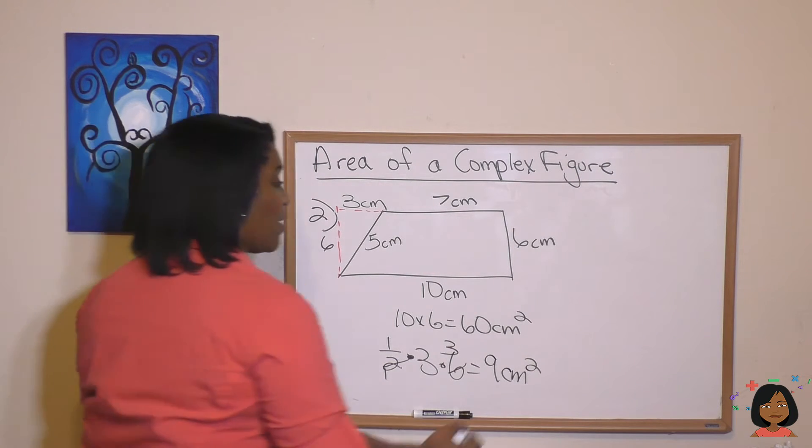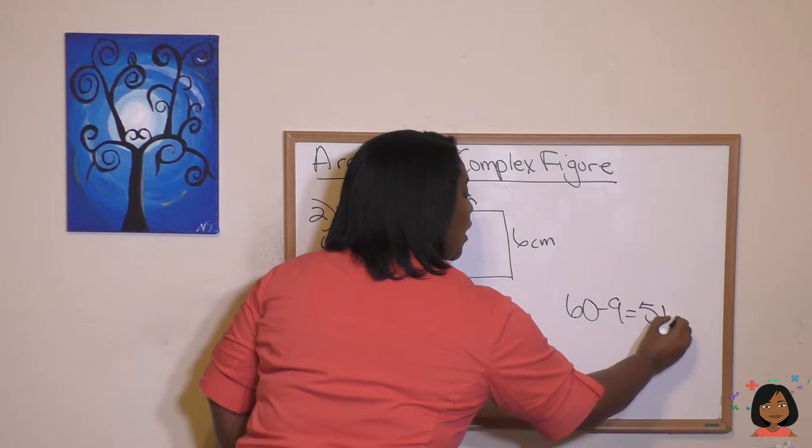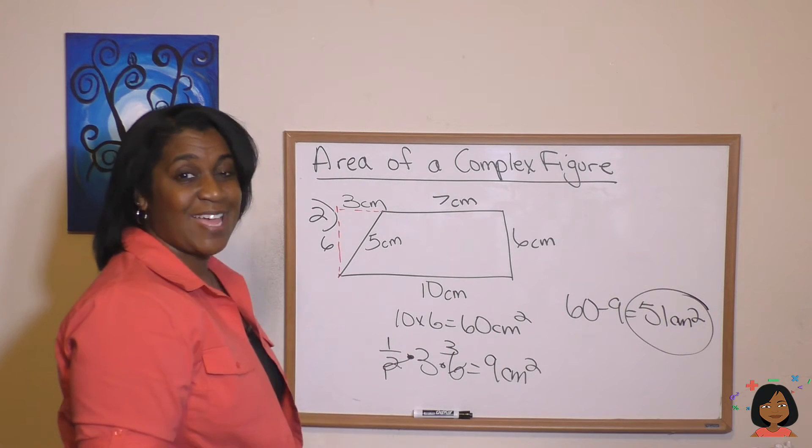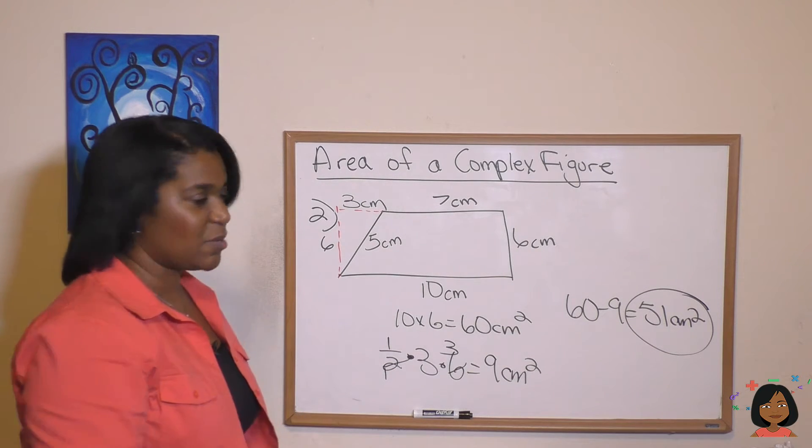Let's go ahead and subtract that out. 60 minus 9 is 51 centimeters squared. Okay, that's your answer. Now I'm going to show it to you the way we did it before to show you that they still equal each other.